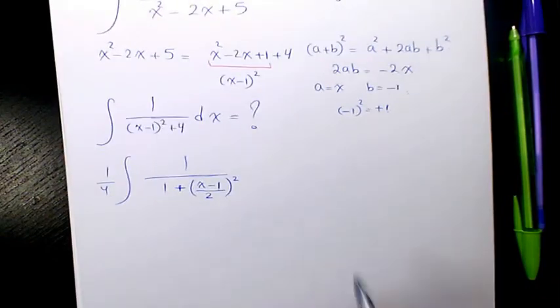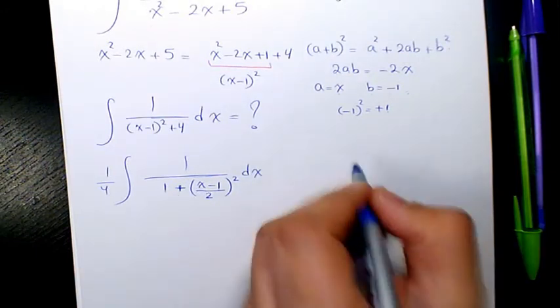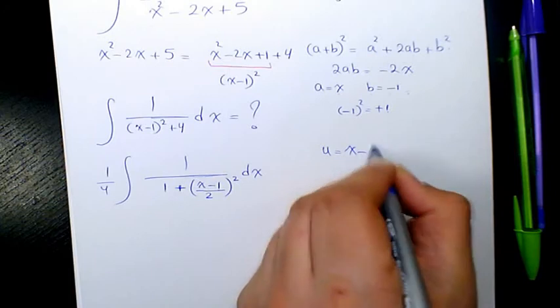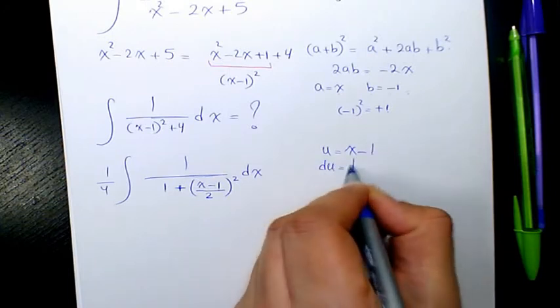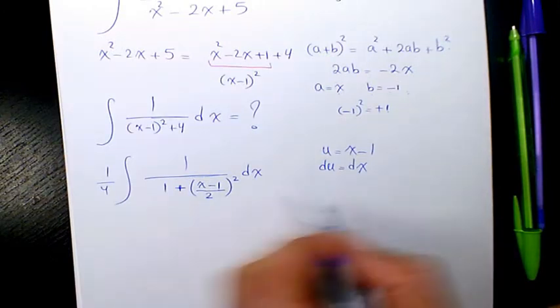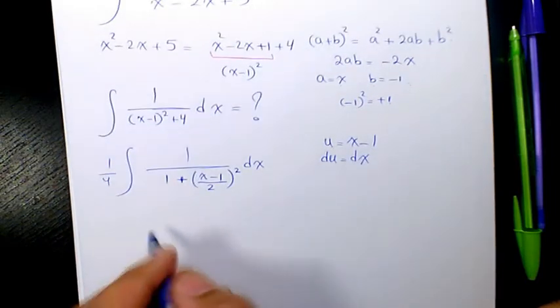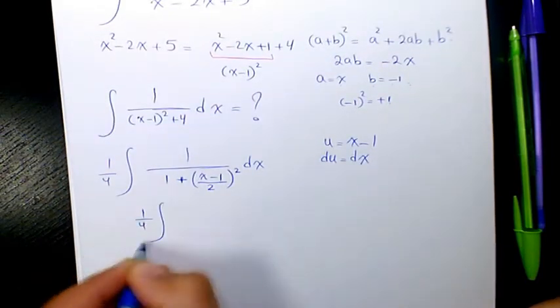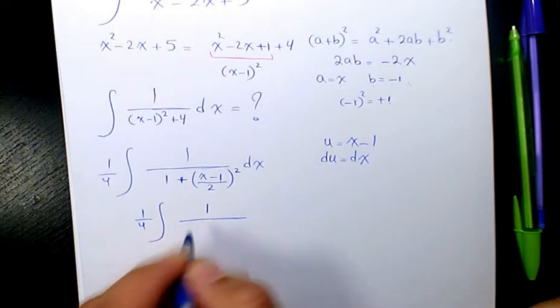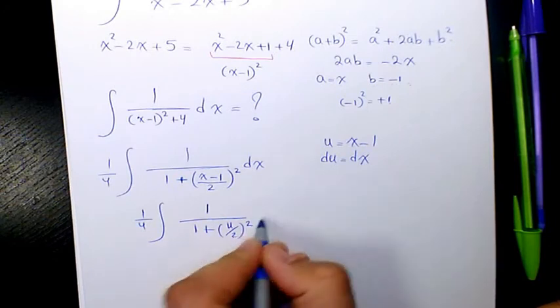Then I can use the substitution method: u equals x minus 1. So du equals dx. So I can say it's going to be 1 over 4, 1 over 1 plus u divided by 2 to the power of 2, du.